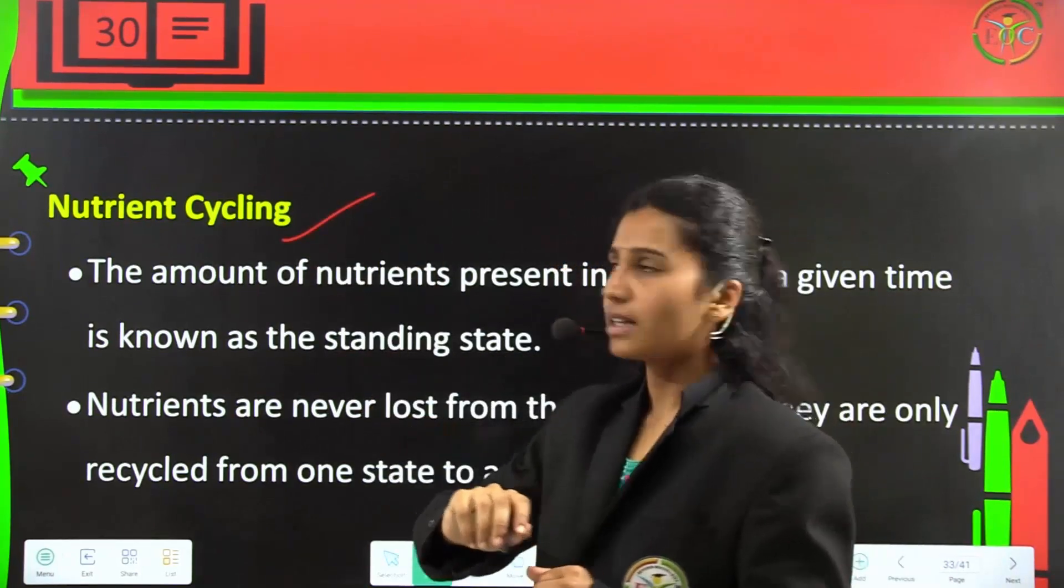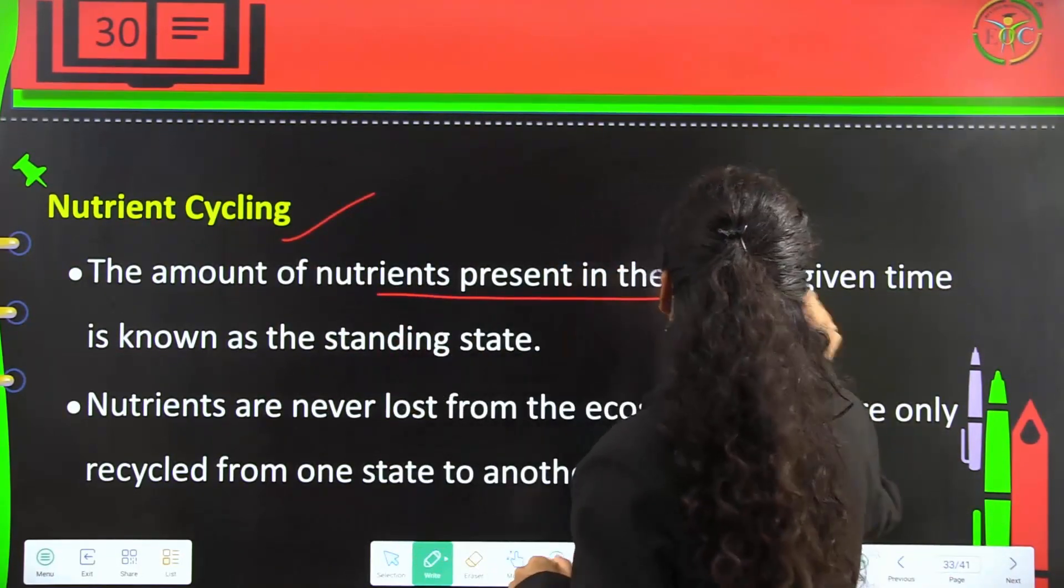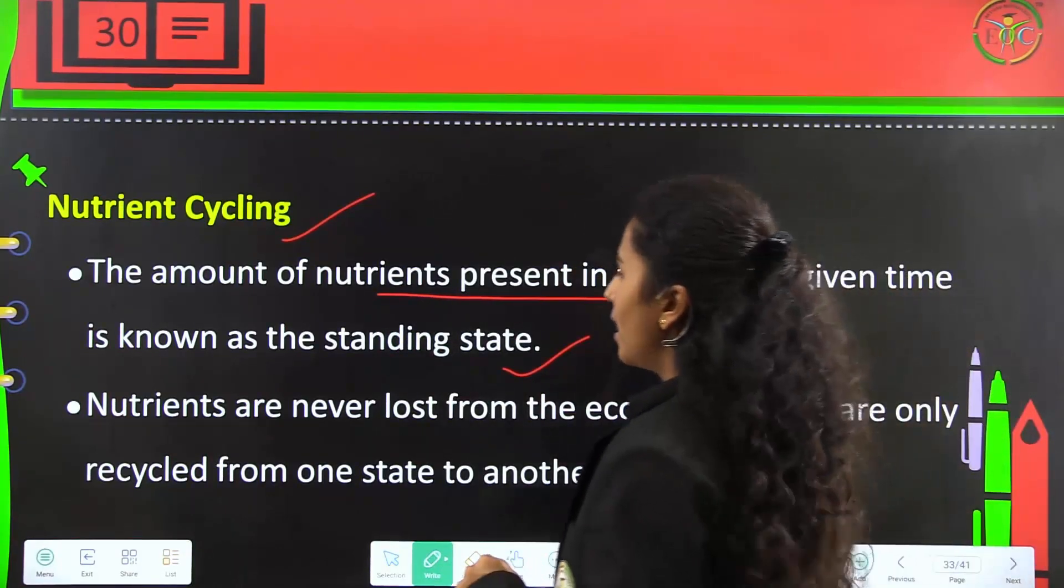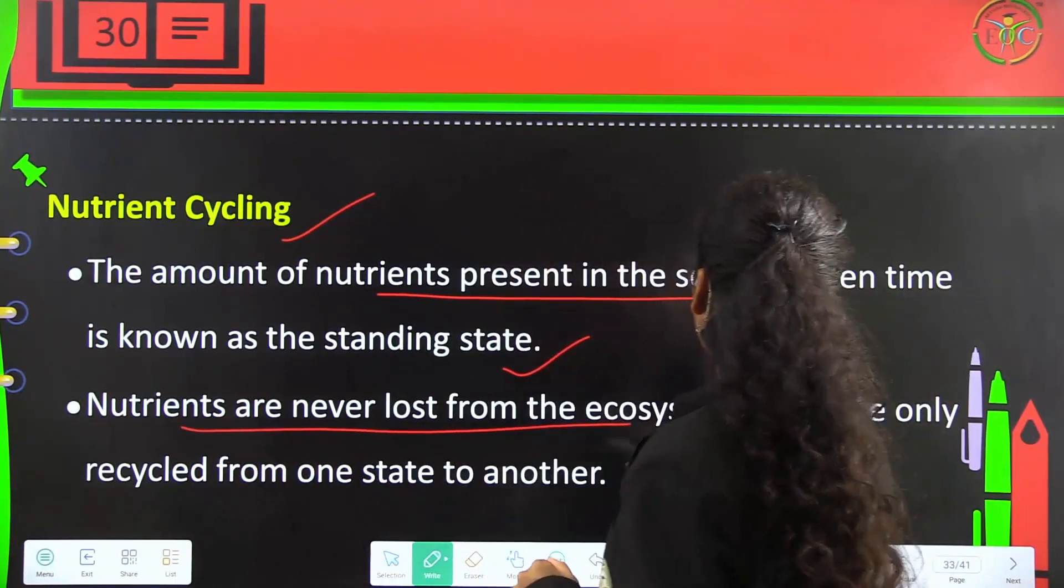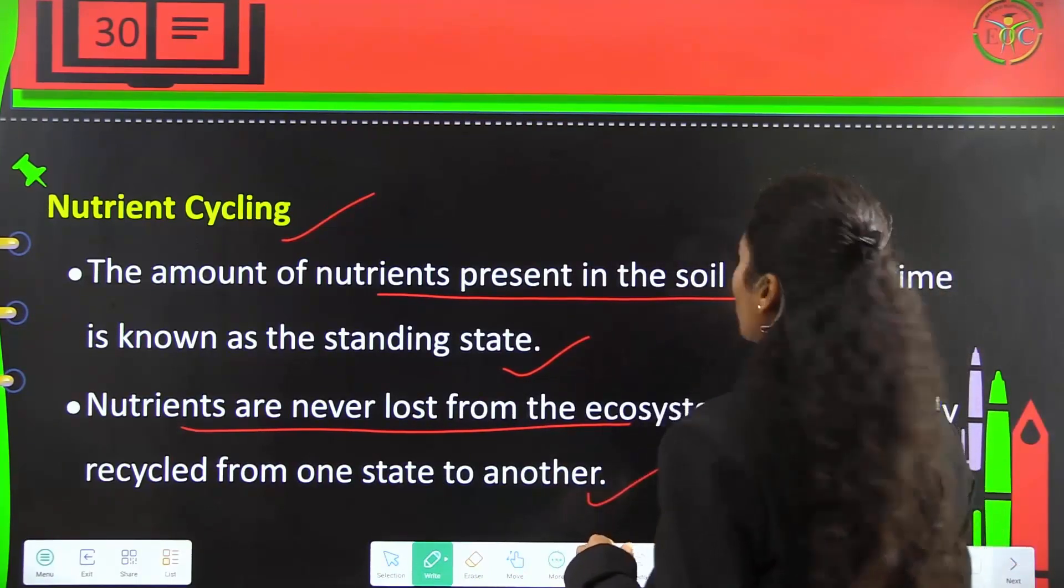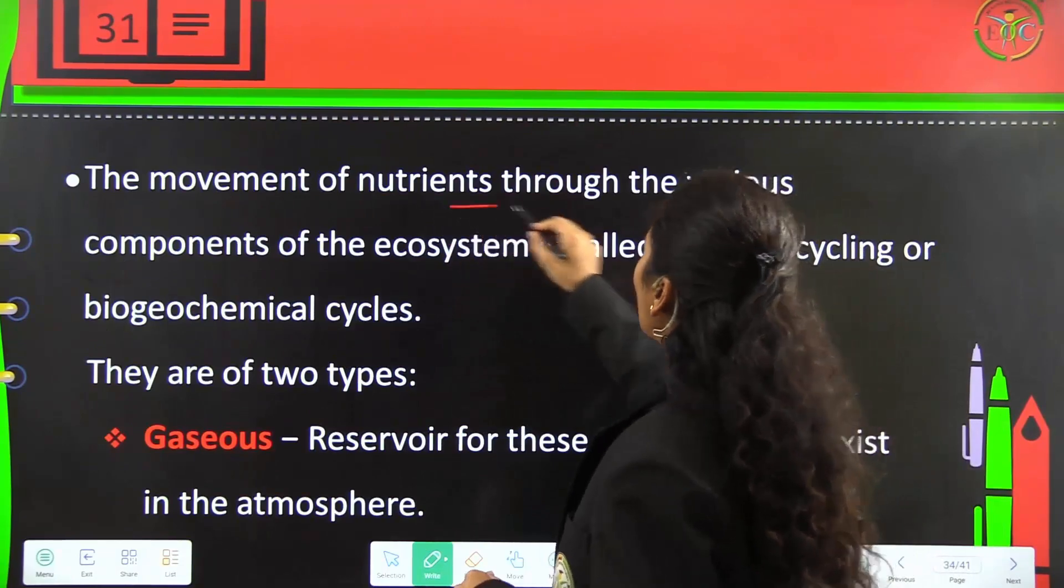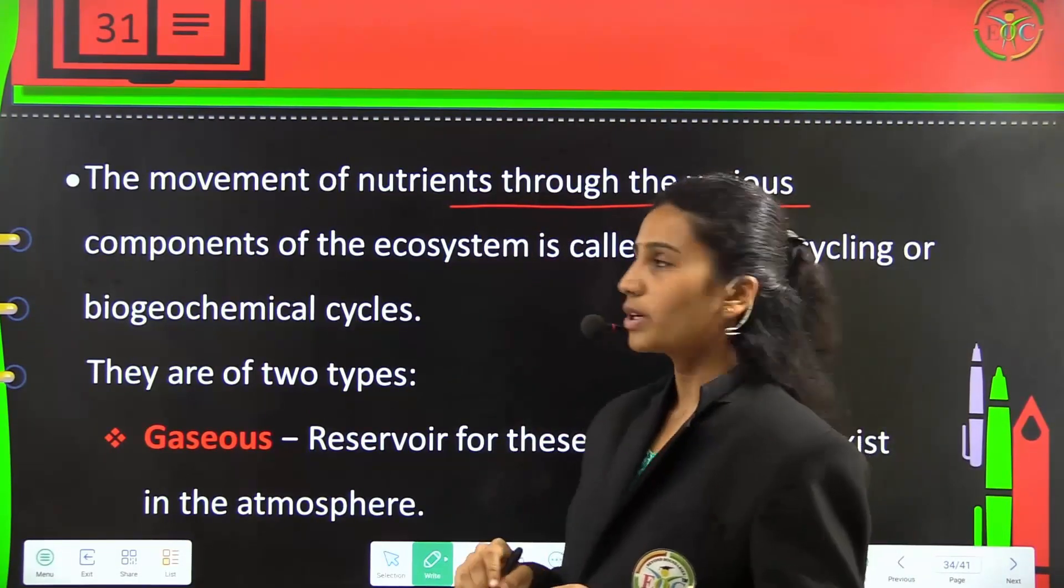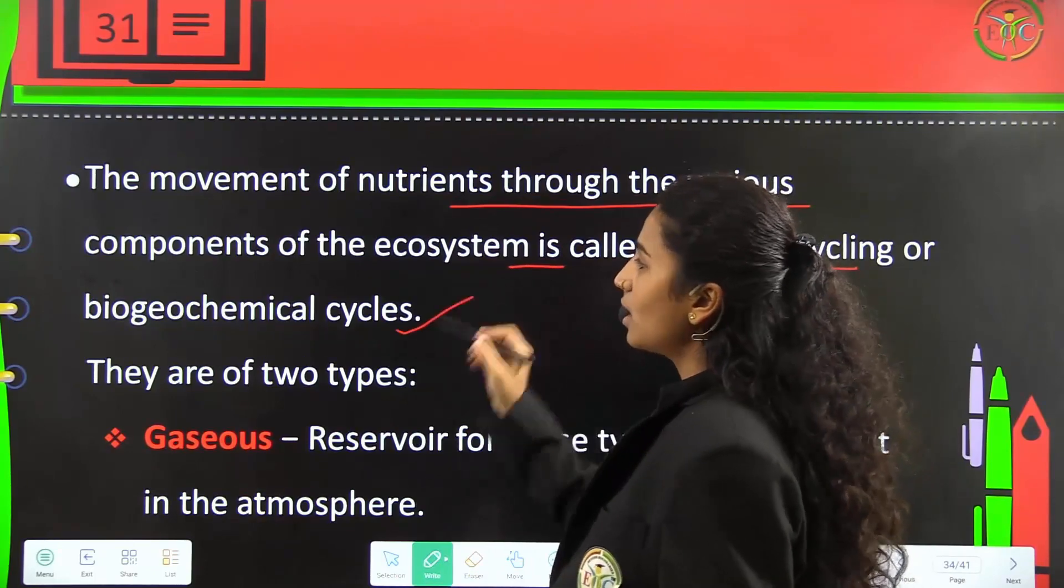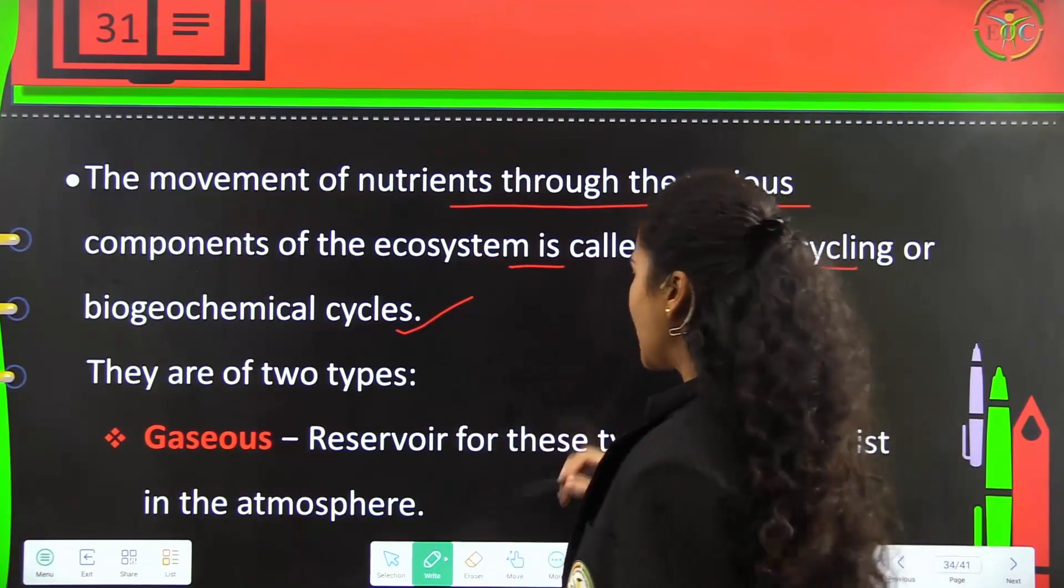Nutrient cycling: The amount of nutrients present in the soil at a given time is known as the standing state. Nutrients are never lost from the ecosystem but are only recycled from one state to another. The movement of nutrients through various components of ecosystems is called nutrient cycling or biogeochemical cycles.